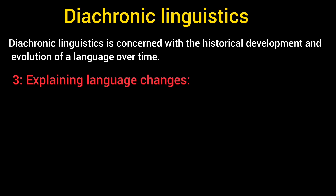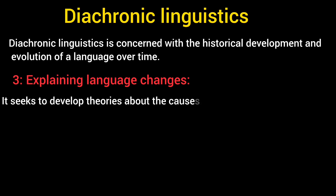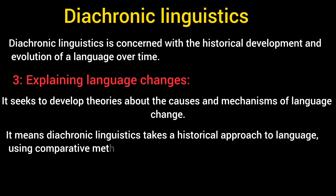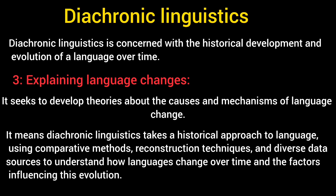Explaining language changes is also one of the main points of Diachronic Linguistics — it seeks to develop theories about the causes and mechanisms of language change. Diachronic Linguistics takes a historical approach to language, using comparative methods, reconstruction techniques, and diverse data sources to understand how languages change over time and the factors influencing this evolution. It offers a valuable perspective for appreciating the dynamism and richness of human languages, aiming to reconstruct not just the sounds and grammar of ancestral languages, but also the historical processes that caused languages to change.